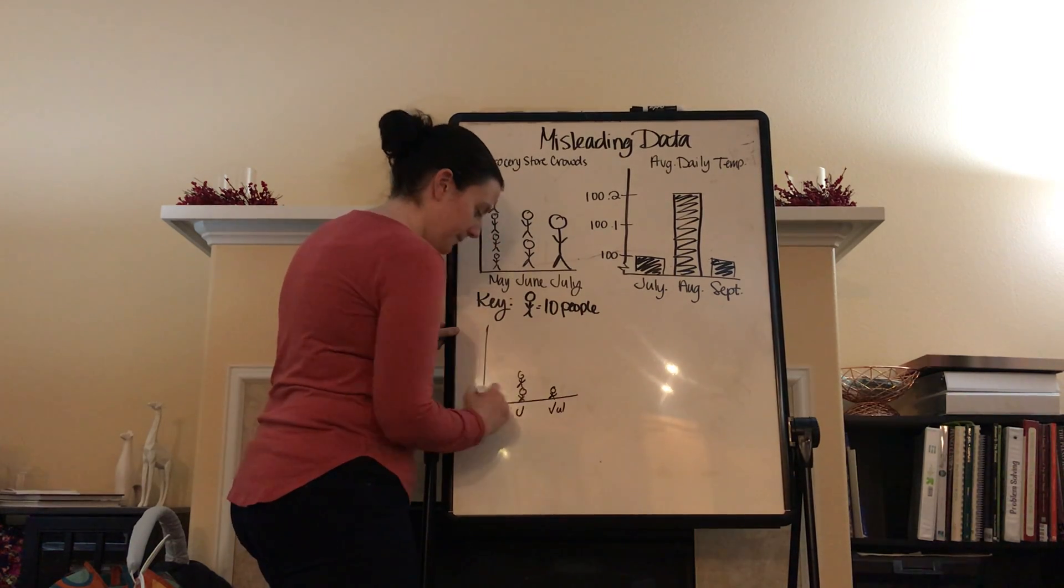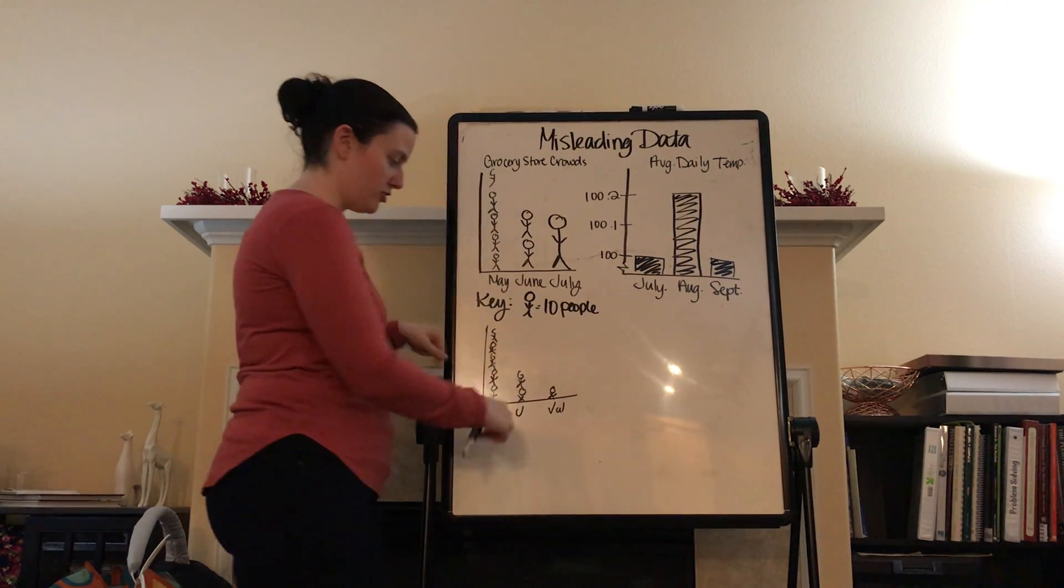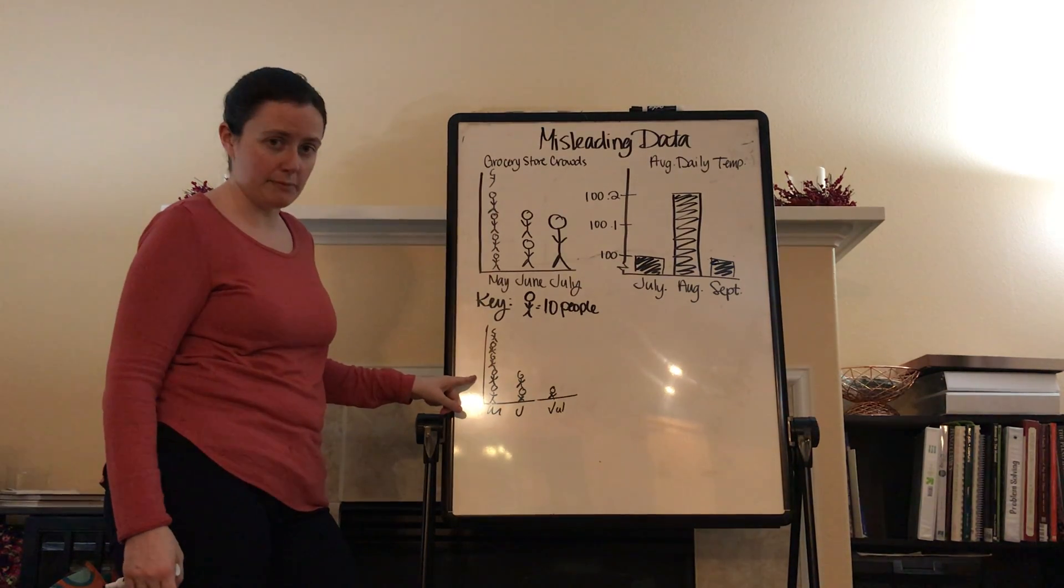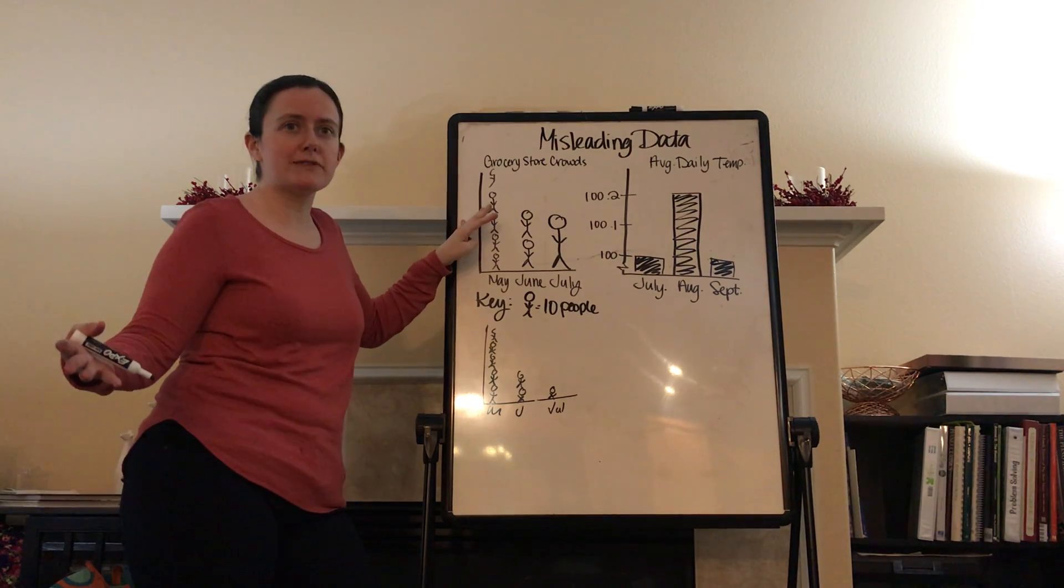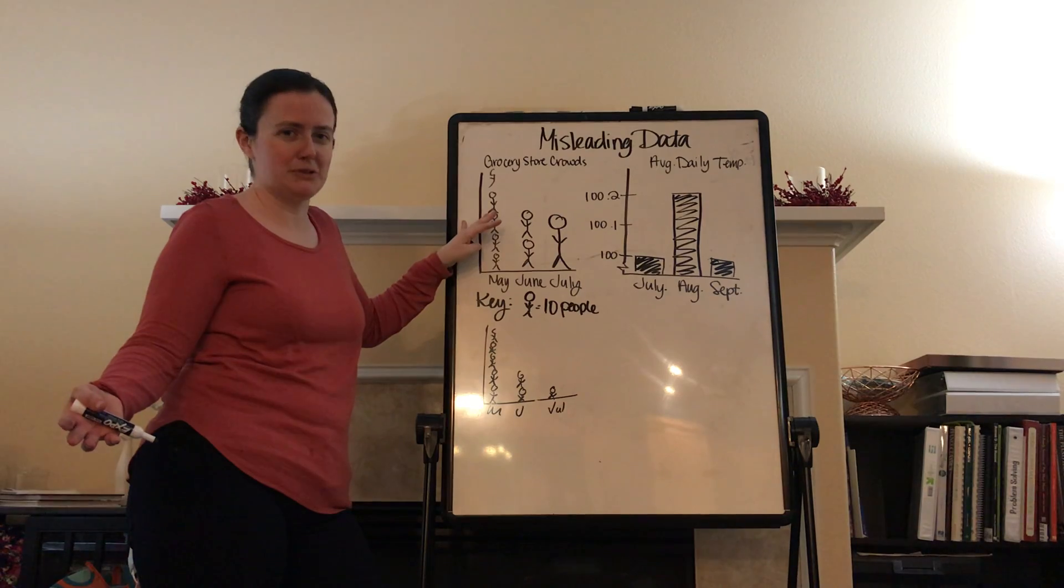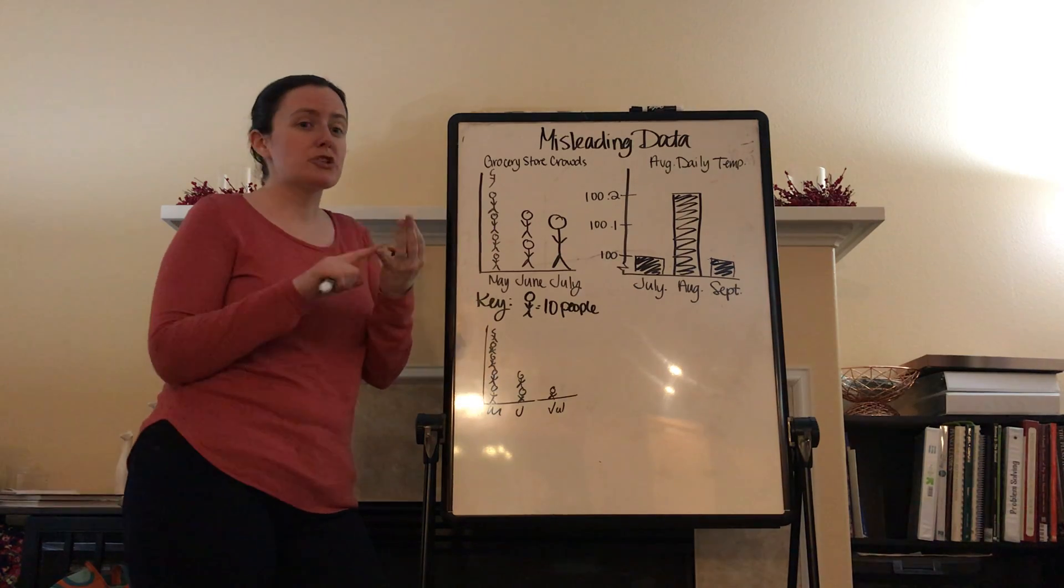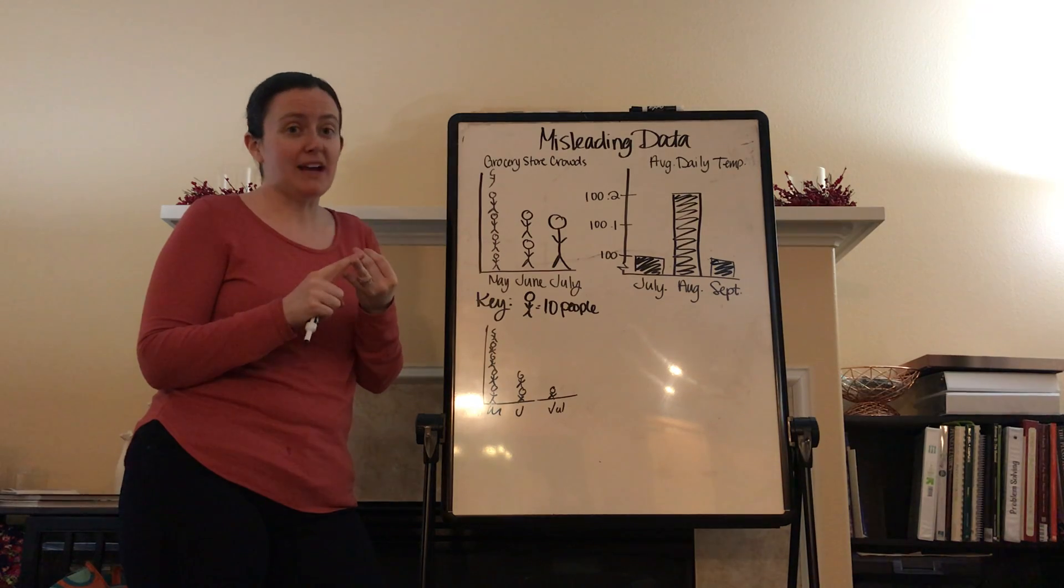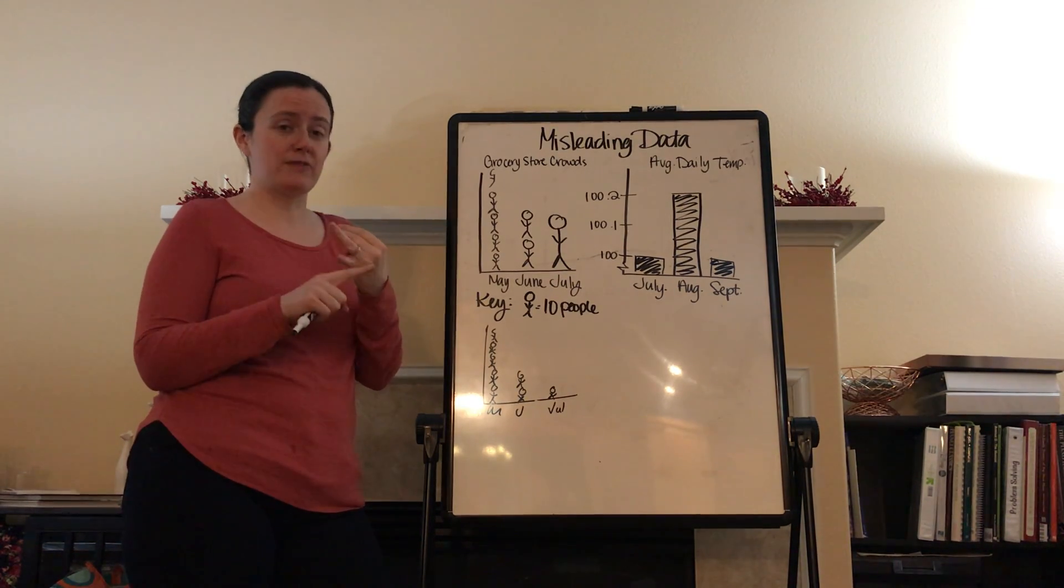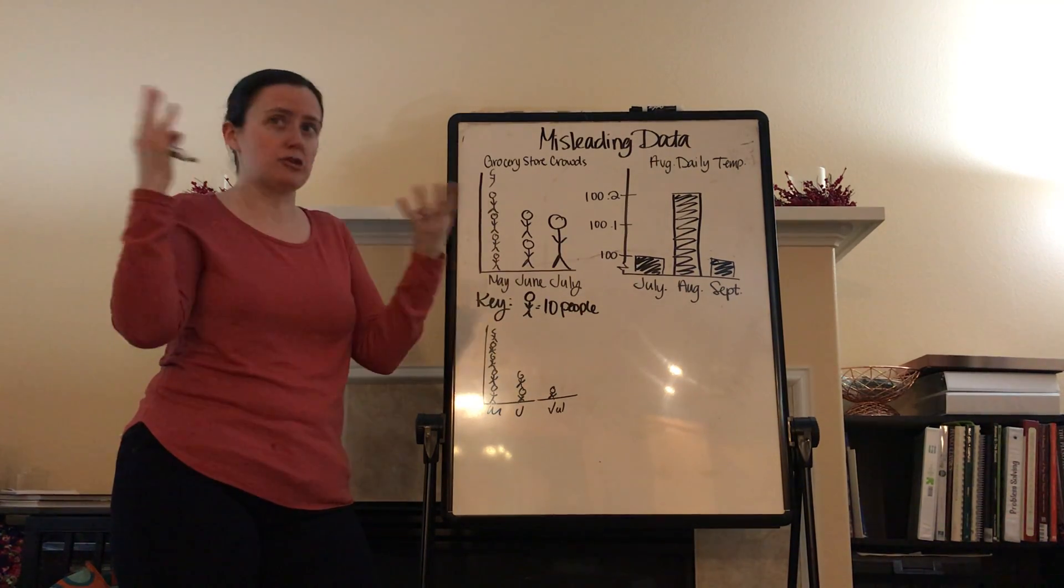You redraw them with all the people the same size. That's how you fix it. So, you would have May, June, July. And, you would have all the people be the same size. And, then, you can clearly see that July had the fewest, June had the next, and May had the most. So, how do you solve this problem? Well, what is the problem? That your pictures are different sizes in a pictograph. That's not. No. Don't do that. How do you fix it? By making the pictures all the same size. You can make all the pictures the same size. That's very general for a pictograph.